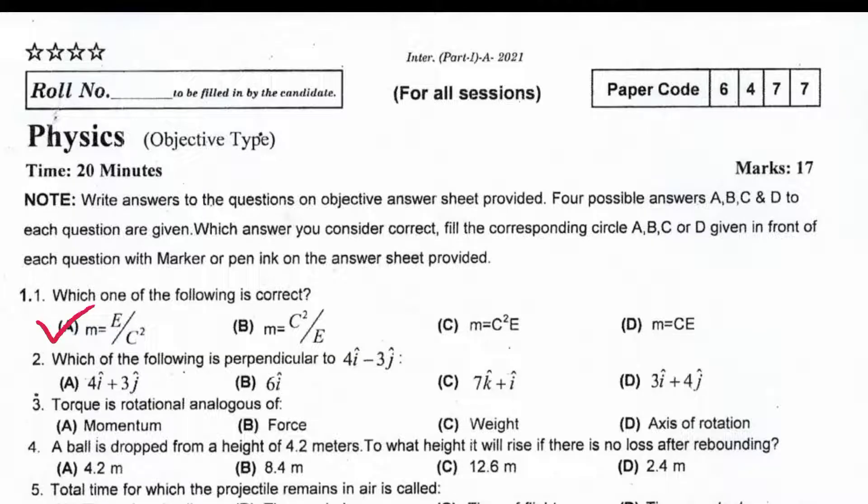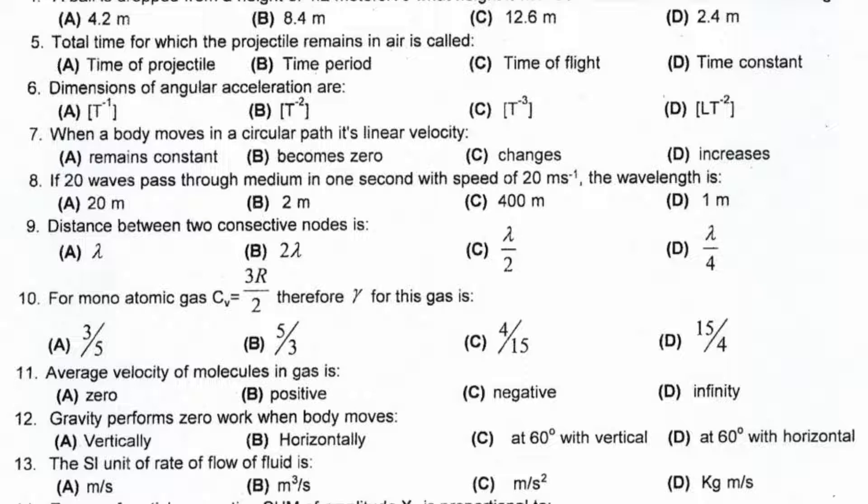Which of the following is perpendicular? 4i - 3j and 3i + 4j. Torque is rotational analogous of force. A ball is dropped from a height of 4.2 meter. To what height it will rise if there is no loss after rebounding? 4.2 meter. Total time for which the projectile remains in air is called time of flight. Dimension of angular acceleration is right option B. When a body moves in a circular path its linear velocity changes. If 20 waves pass through medium in one second with speed of 20 meter per second, the wavelength is 1 meter. Distance between two consecutive nodes is λ/2. For monoatomic gas CV = 3R/2, therefore gamma for this gas is 5/3. Average velocity of molecules in gas is zero.